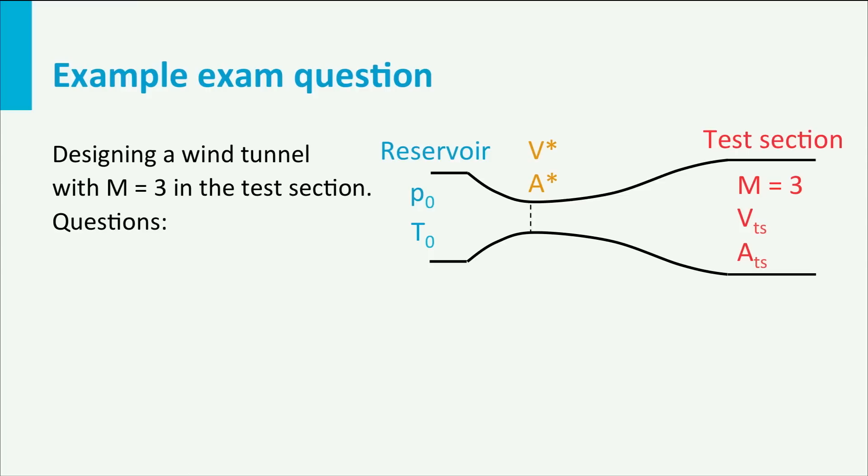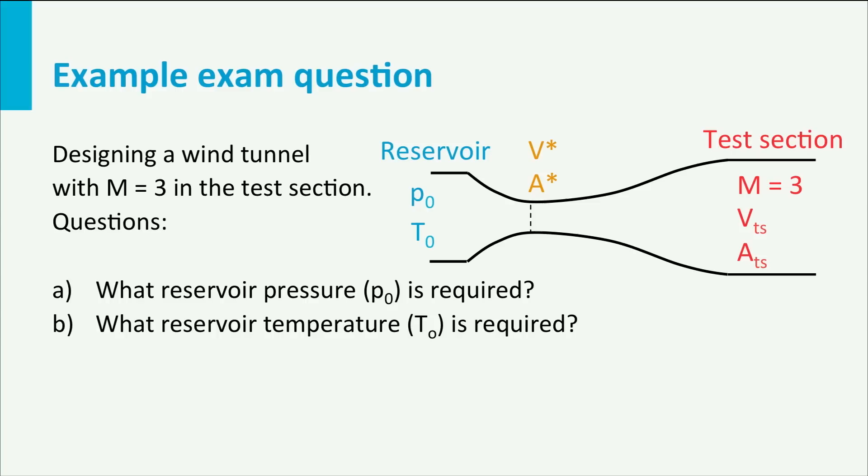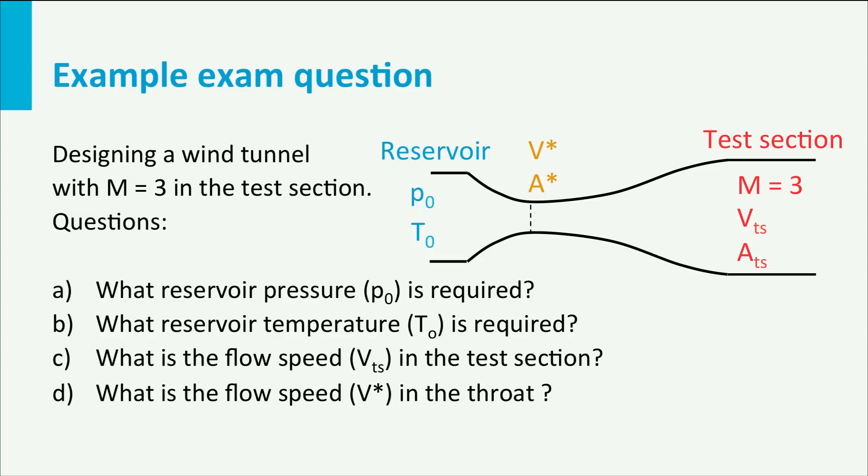Here is the problem we will tackle. Suppose it is your job to design a supersonic wind tunnel with Mach 3 and standard sea-level atmospheric conditions in the test section. Assume gamma is 1.4. The questions are: what reservoir pressure P0 is required? What reservoir temperature T0 is required? What is the flow speed VTS in the test section? What is the flow speed V* in the throat? What is the expansion ratio ATS over A*?